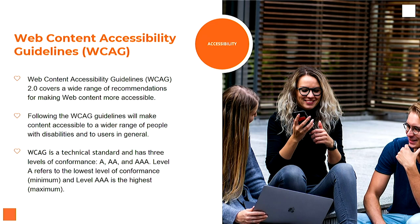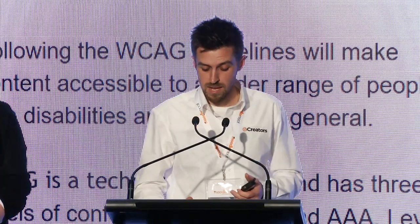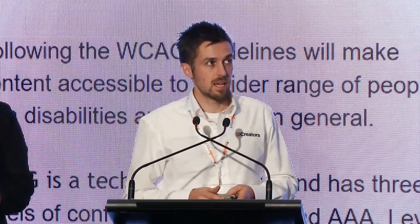Leading on from that is the WCAG — the Web Content Accessibility Guidelines — which basically set out a structure. There are three tiers, which I'll talk to in a minute, to basically set out accessibility levels and how we can make content more accessible to our users. A lot of organisations work towards a double-A standard, and there are those three levels I'll talk about as well.